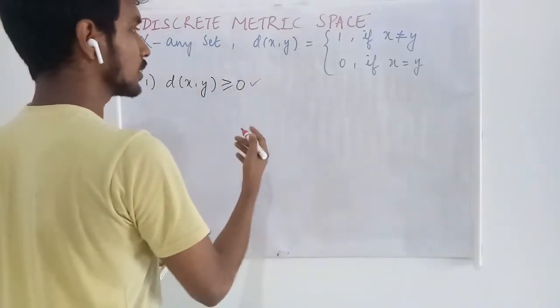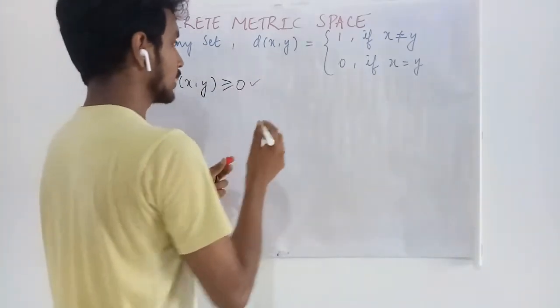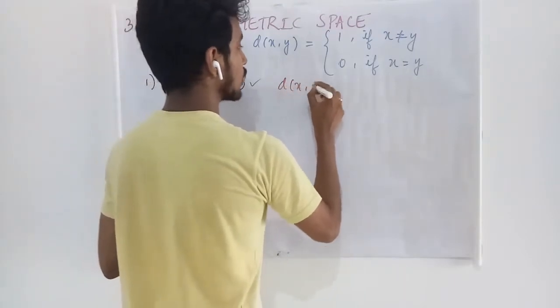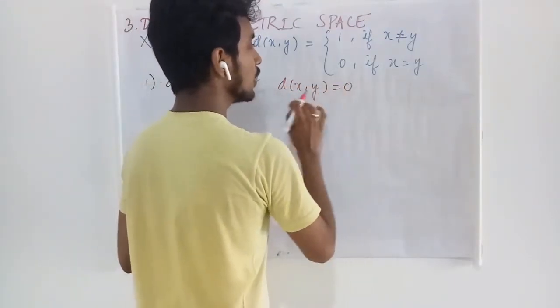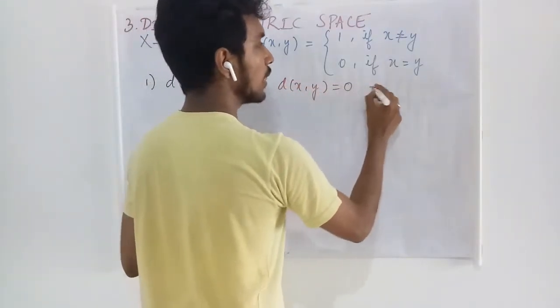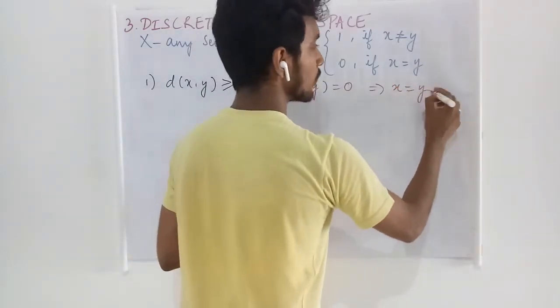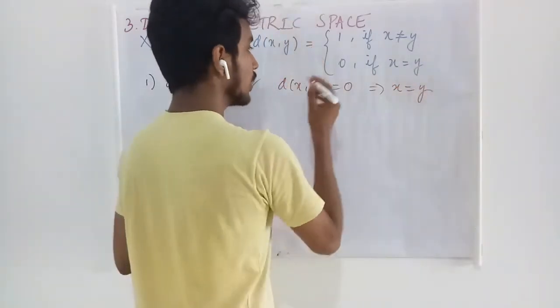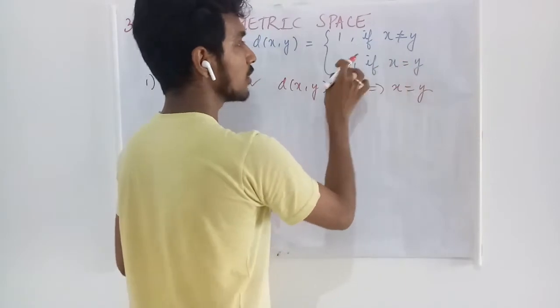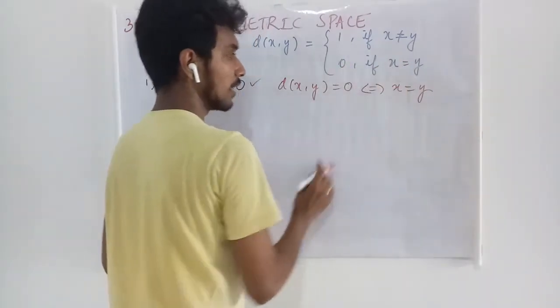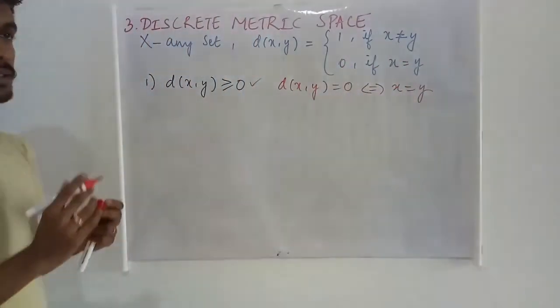What do we have to say? We have to say the second thing. That is, d(x,y) = 0 only if x and y are the same. And if x and y are the same, it is defined to be 0. From the definition, the first condition is verified.